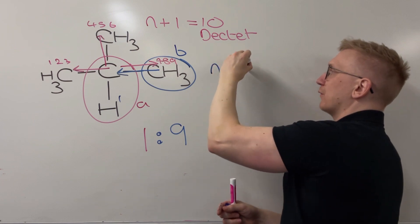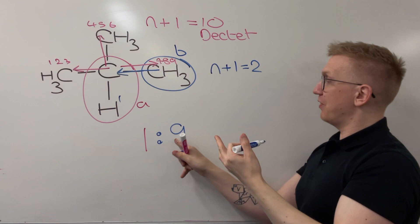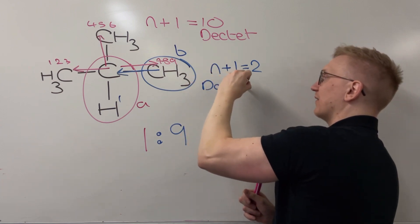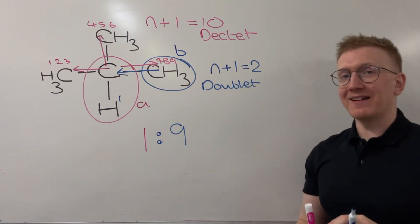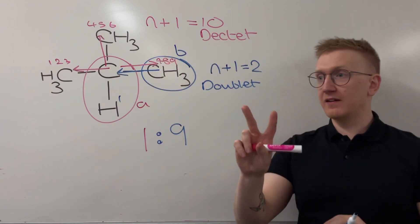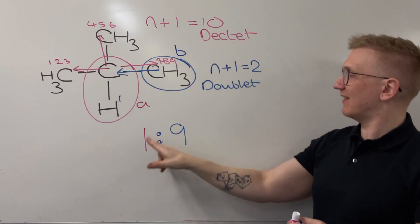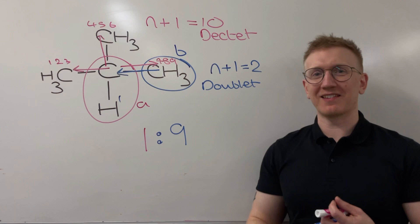And here I do n plus one, and that's going to give me two. So what I'm creating here for this environment is going to be a doublet. So I would expect the hydrogen NMR spectrum for this molecule to contain two peaks. They would be in a one to nine ratio, and they would be a dektat and a doublet in terms of their splitting patterns.